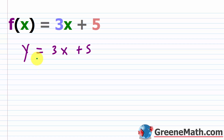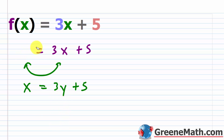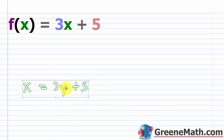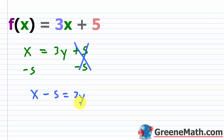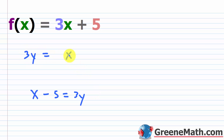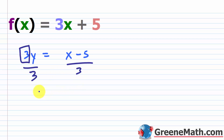So if I swap x and y, I'm going to say this is x and this is y. And now I'm just going to solve for y. We subtract 5 from each side of the equation — this cancels, and we have x minus 5 is equal to 3y. I like my y on the left, so 3y is equal to x minus 5. To solve for y, we have this 3 that's multiplying y, so we divide both sides by 3, and we get y equals (x minus 5) over 3.